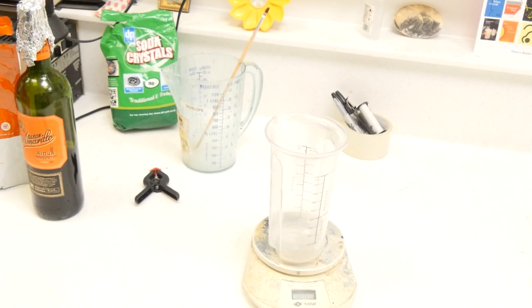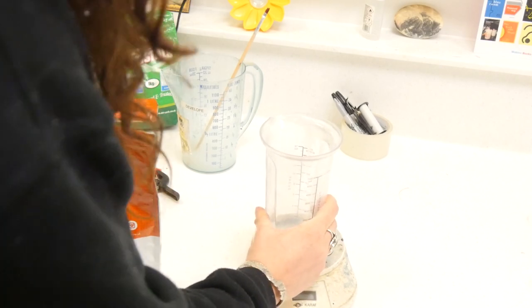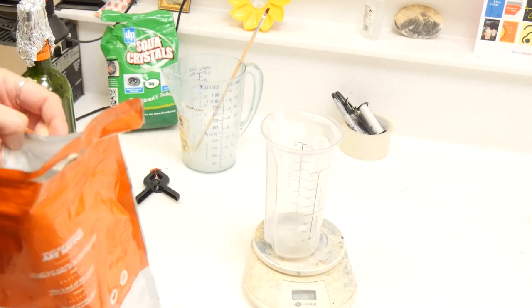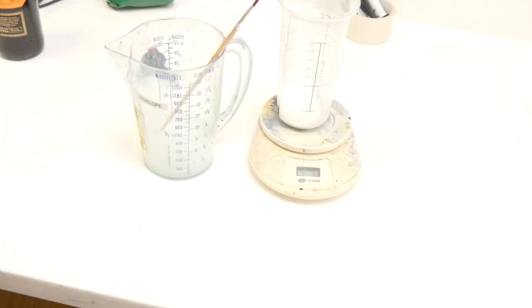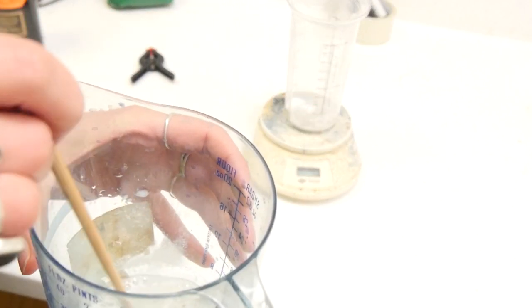So now while I'm waiting for that to dissolve, I'm going to measure out 10 grams of vitamin C. Now my soda crystals have dissolved, I'm going to pour in the vitamin C until that has dissolved also. You can see how it's fizzing.